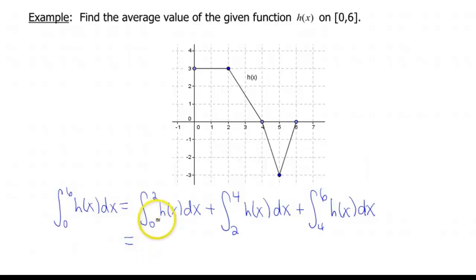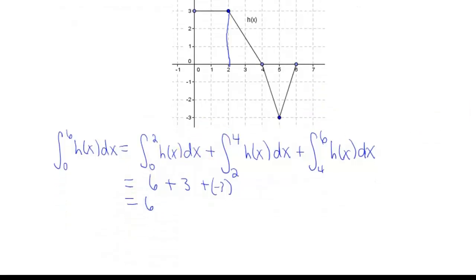So from 0 to 2, we have a rectangle, and that has a base of 2 and a height of 3, so that gives us an area of 6. From 2 to 4, we have a triangle, and that has a base of 2 and a height of 3, so that's gonna have an area of 3. And then from 4 to 6, we have a negative area because it's below the x-axis. So that has a base of 2 and a height of negative 3, so that's gonna have an area of negative 3. So that's gonna give us a grand total of our area to be 6.